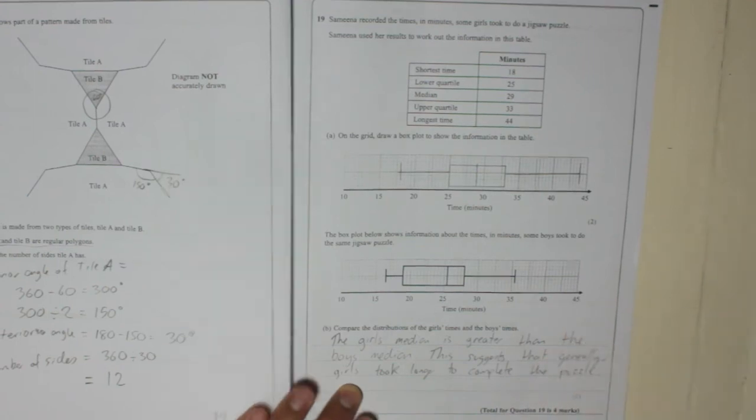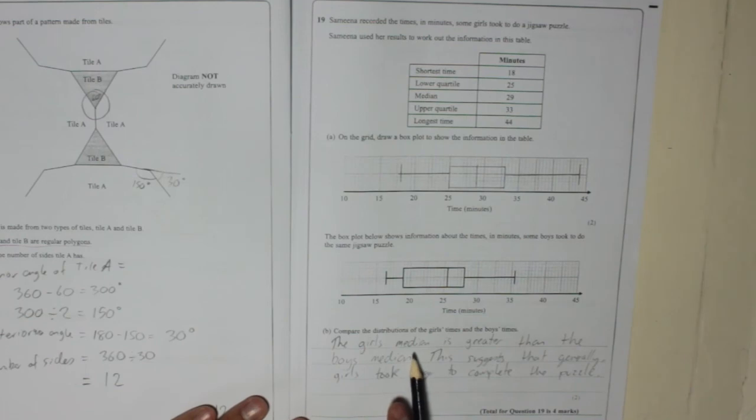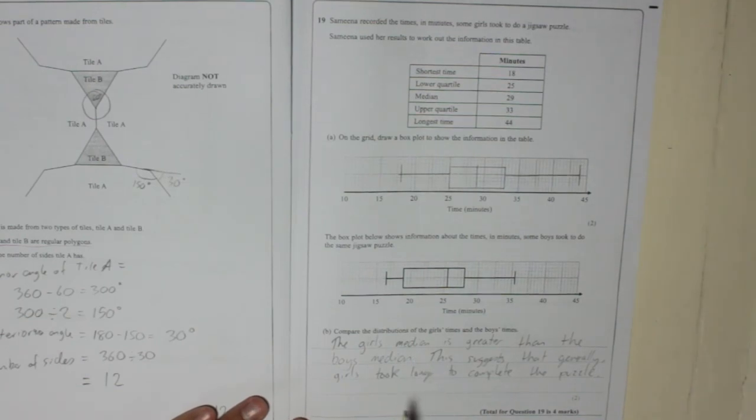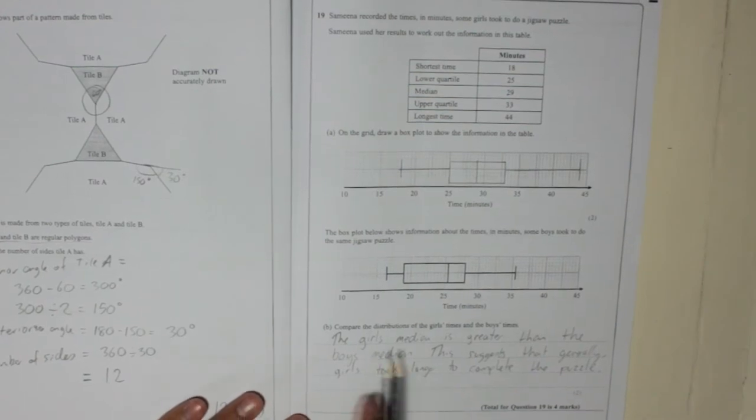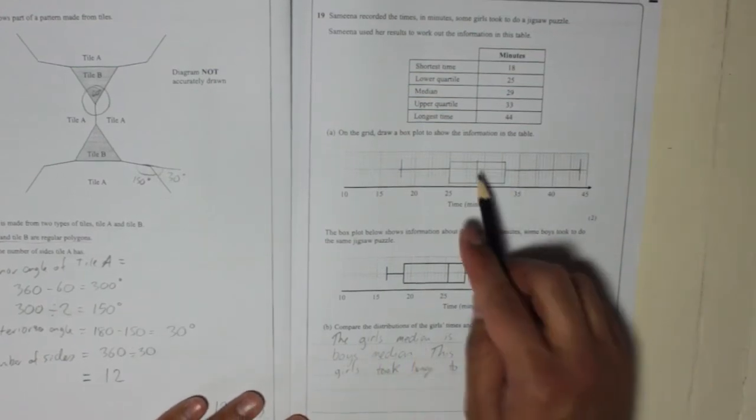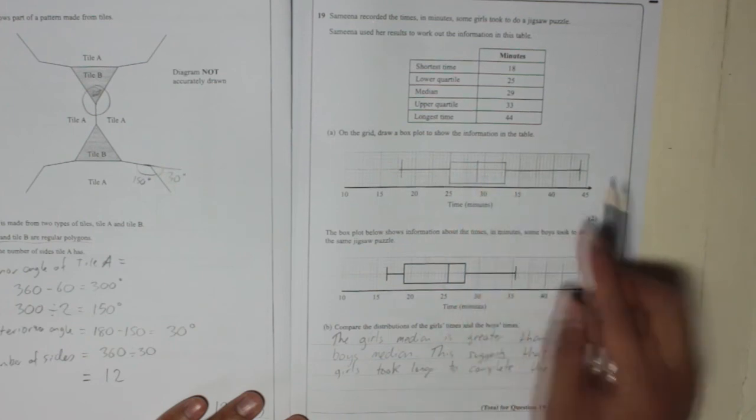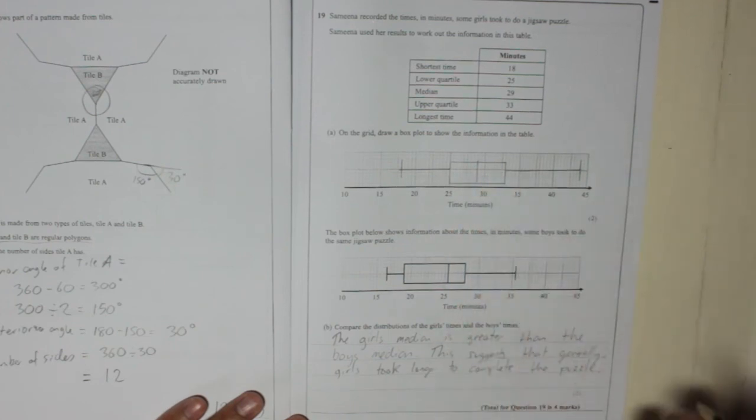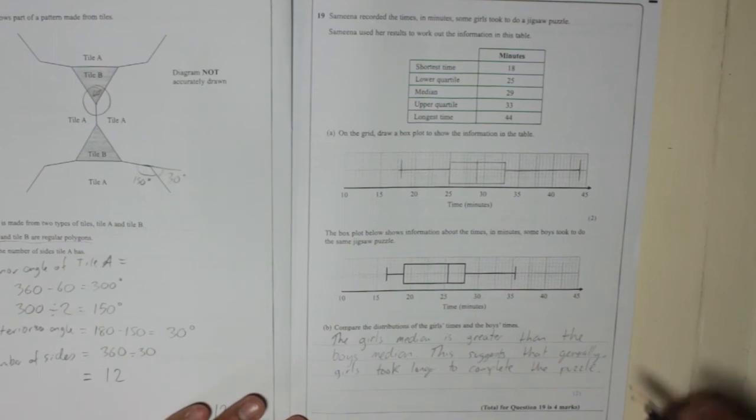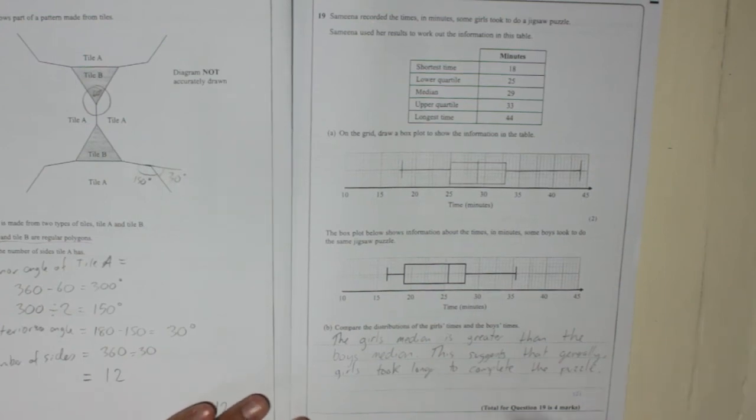Now usually, if you're going to talk about the median and then talk about a measure of spread, one of them needs to be linked with what it actually means. So I've linked the median to it, I think it's always easier that way. Because the girls have got the slower median, in real life it means that they took longer to complete the puzzle.